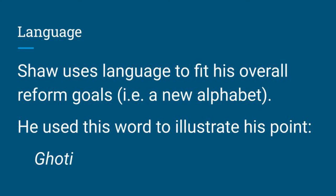Another theme essential to Pygmalion is language. Shaw uses language to fit his overall reform goals — he even wanted to create a new alphabet. And if you find an original script of Pygmalion, first off, sell it because it's going to be worth a lot of money. But what I mean is if you find it written in Shaw's original manuscript format, you'll notice that he doesn't have an E at the end of Shakespeare, that he doesn't use apostrophes in contractions. He was all about shortening the language. So you see a lot of Shaw reflected in the character of Henry Higgins.